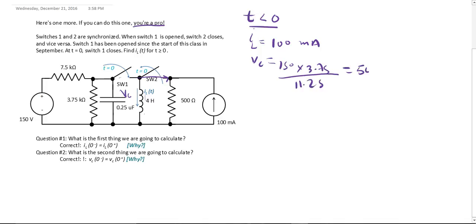This equals to 50 volts. Now that you have your initial conditions, solve for when t is greater than or equal to 0. When t is greater than or equal to 0, what happens is this switch opens, which means you don't care about this part anymore.